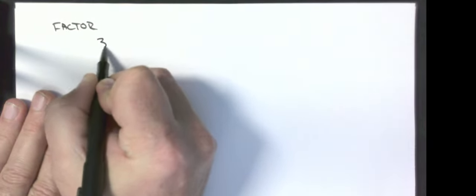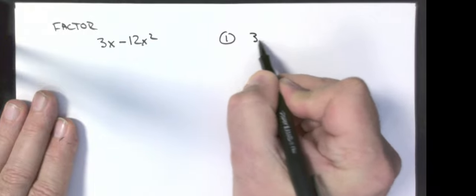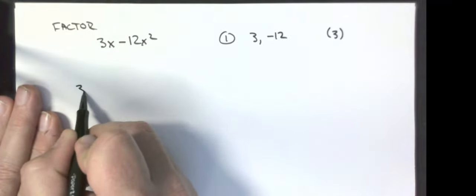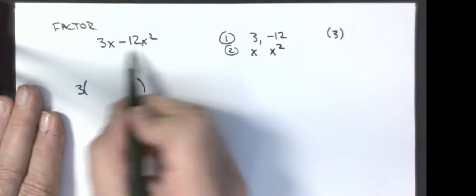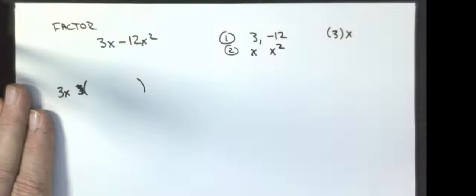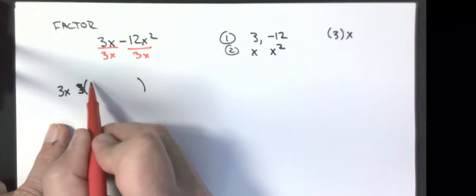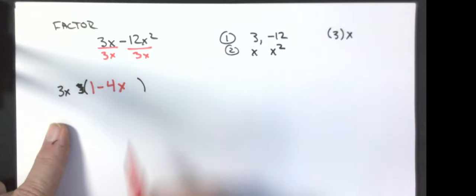Let's look at more examples. Factor 3x minus 12x squared. My numbers are 3 and negative 12 — the biggest number that goes into both is 3. I have an x and an x squared, so the lowest power of x is just a single x. I'm pulling out a 3x. Dividing everything by 3x: 3x divided by 3x is 1, negative 12 divided by 3 is negative 4, and x squared divided by x is x. So the answer is 3x times (1 minus 4x).